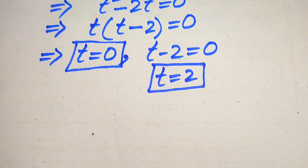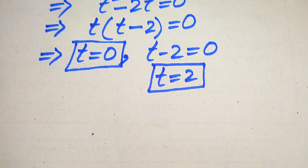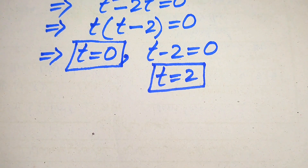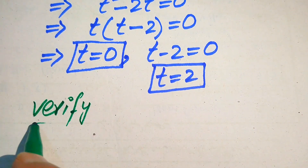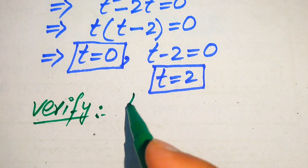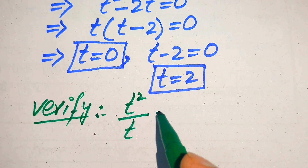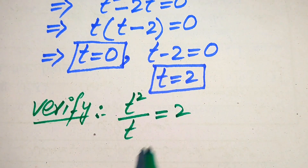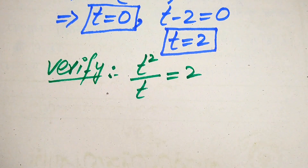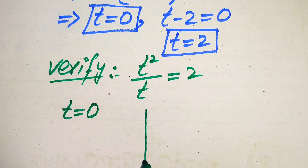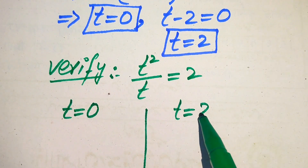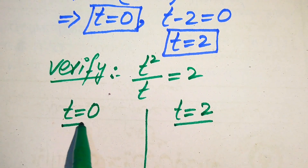In the next step we verify which roots are solutions and which are extraneous. We copy down the original equation: t squared divided by t equals 2. On one side we verify t equals 0, and on the other side we verify t equals 2.